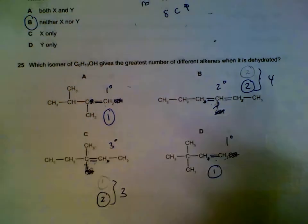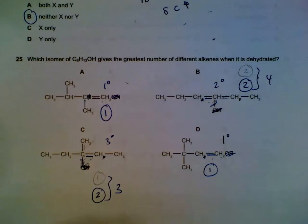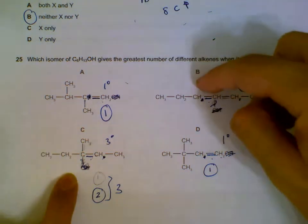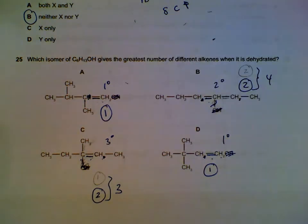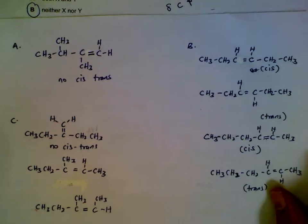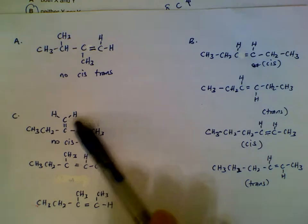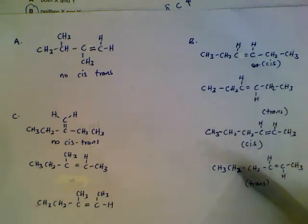In general, primary alcohols typically give only one alkene isomer, while secondary and tertiary alcohols require more careful checking. I'll show the structures for B and C — you can pause the screen to check. There are three possible structures for C and four possible structures for B.